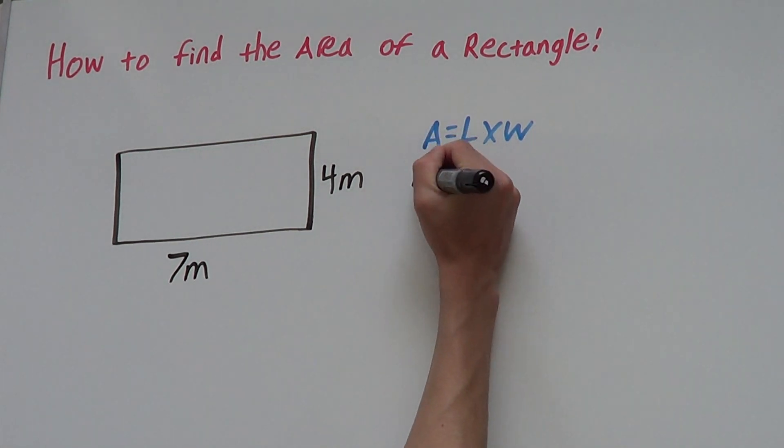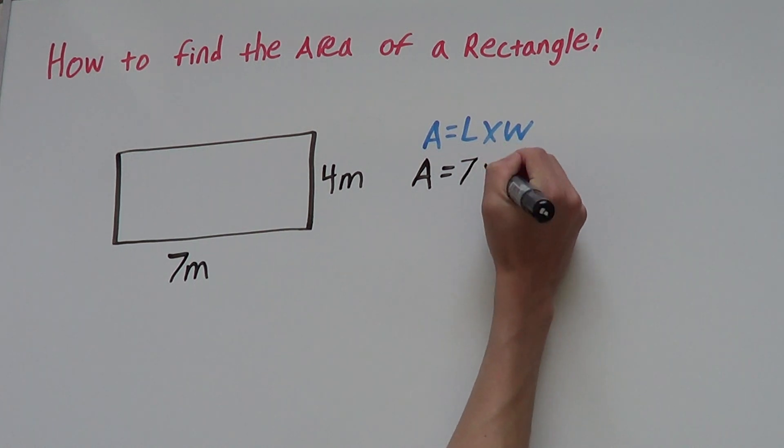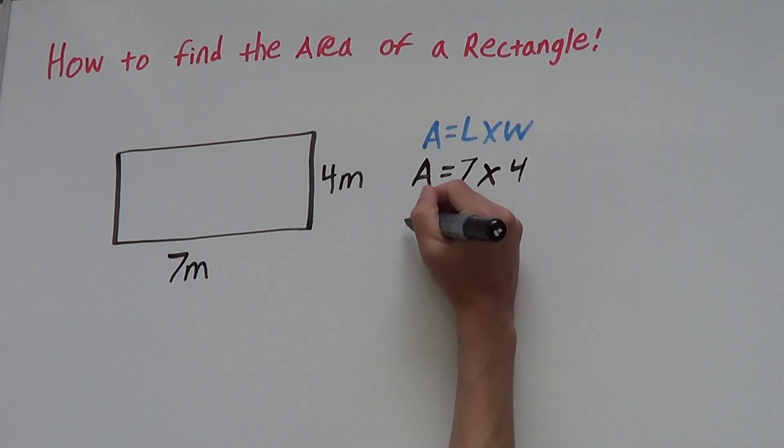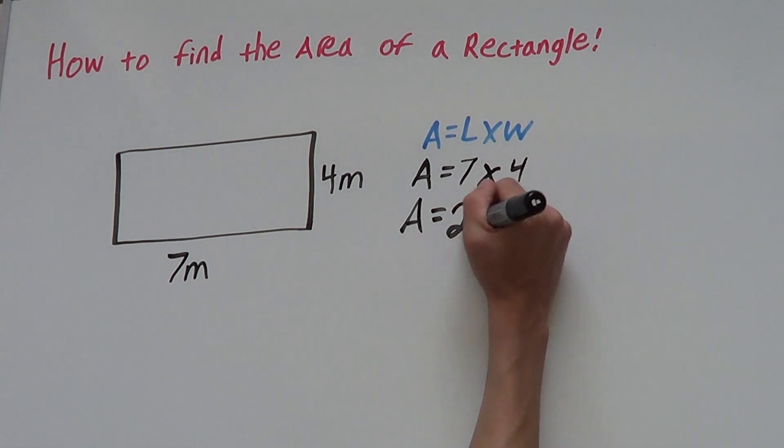Our area equals length which is 7 times width which is 4. Our area equals 7 times 4. That's 28.